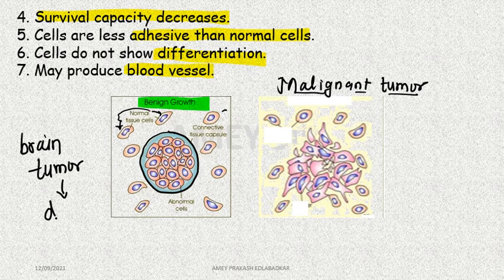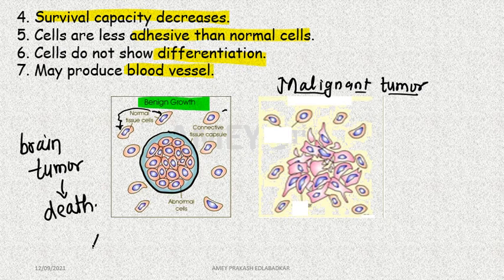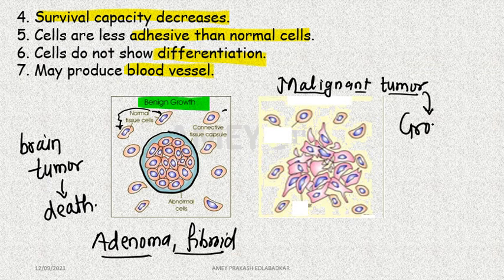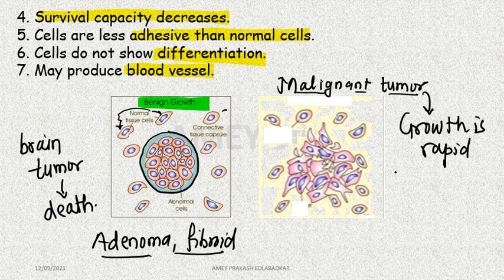Some benign tumors are fatal and harmful, such as brain tumor, which can lead directly to death. Some benign tumors also become malignant, like adenoma or fibroid. In these, the tumor becomes malignant and spreads. The growth rate of a malignant tumor is always rapid — comparatively faster — and mortality rate is also higher compared to benign tumors.